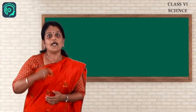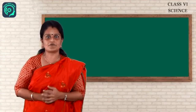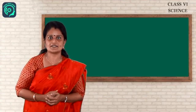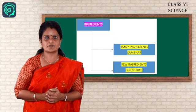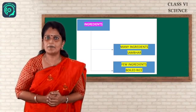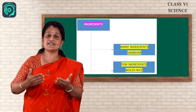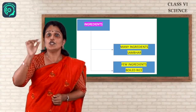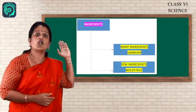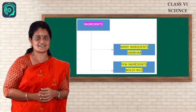So students, next, we know that for baking boiled rice, we need two raw materials. What are they? Just water and the raw rice. But what about sambar and vegetable curry? We need more materials to make that food items. So that material used to make a food item is called as ingredients. It's called as ingredients.